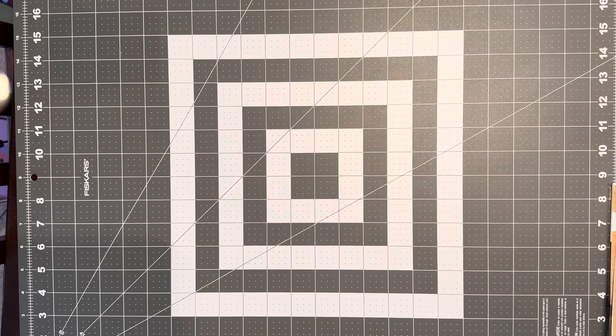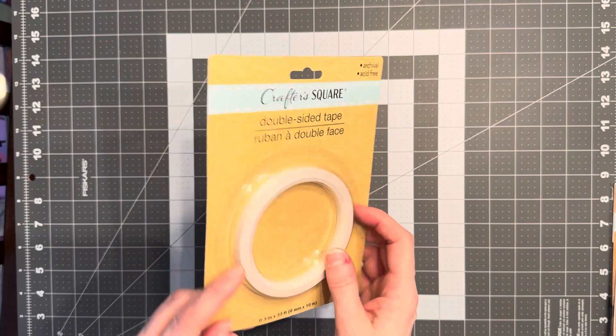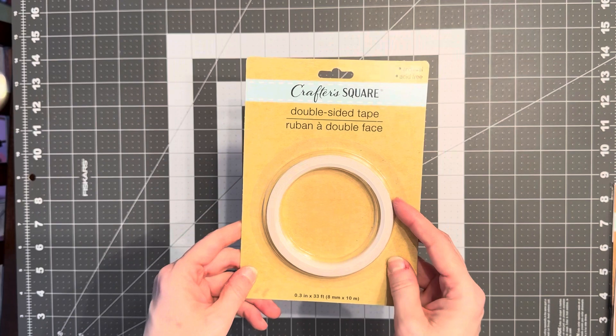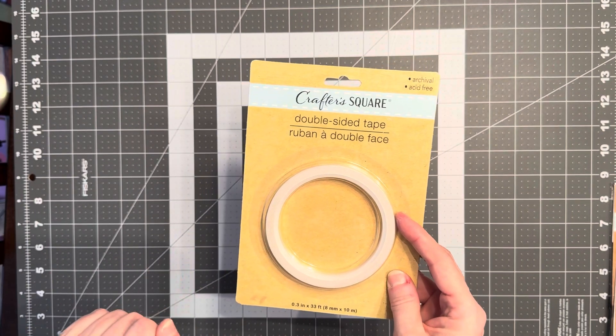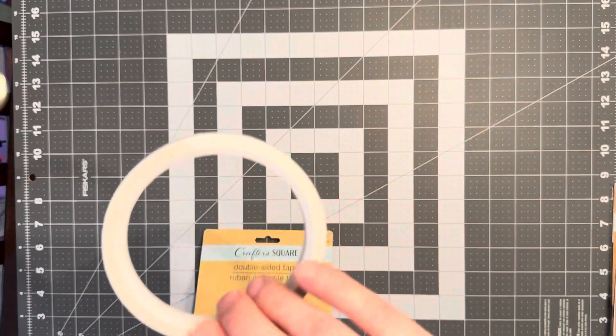I purchased some double-sided tape. This has worked really well for me in the past, so I just started using the last roll that I bought. So I like to have one kind of in reserve.